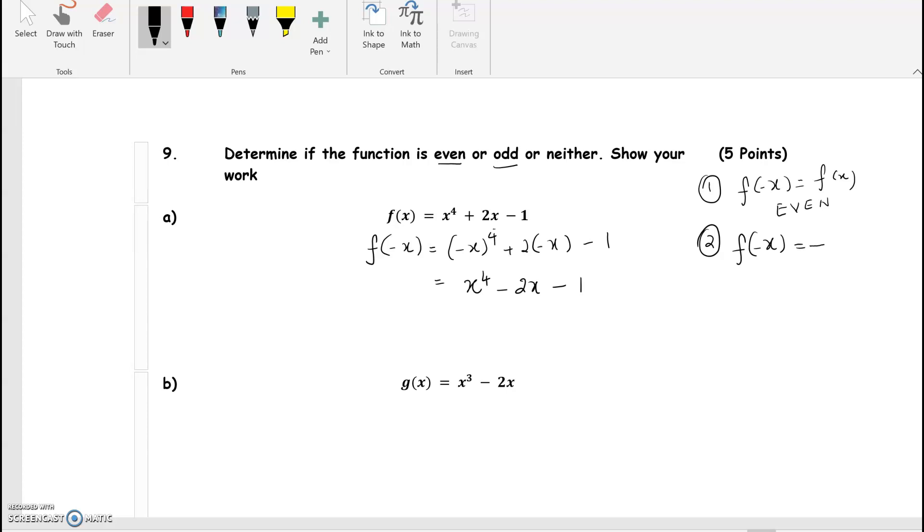Basically you can factor out a negative sign, and whatever is inside the parentheses, if it's equal to f of x, then it's called an odd function. If it's neither, I mean none of these happen, then that would be neither even nor odd.